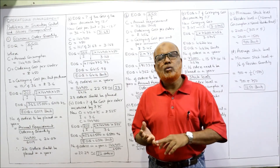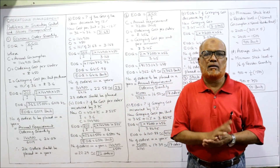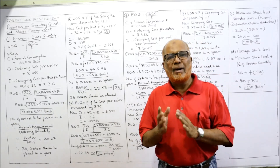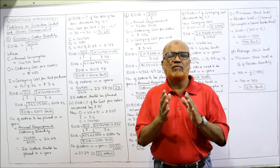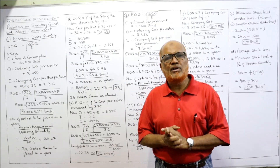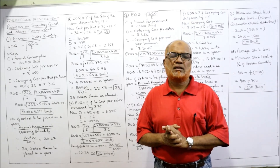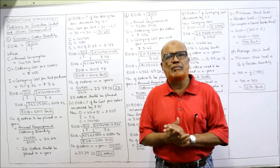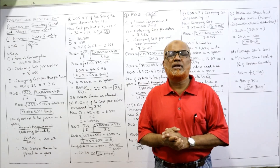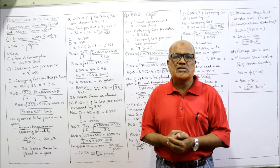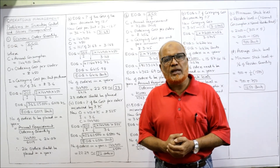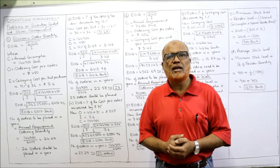In this first video on problems, I have explained how to calculate EOQ, how to calculate the number of orders to be placed in a year, and the different formulas for calculating maximum stock level, minimum stock level, average stock level, and reordering level. Watch all the videos from beginning to end, keep running notes, and don't miss any single problem — then you can face the examination with confidence. We'll continue with the next problem in the next video.